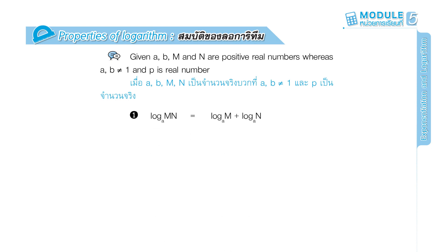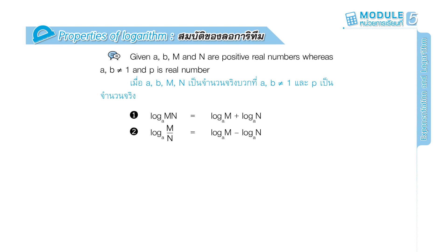Property 1: log(m·n) base a equals log m base a plus log n base a. Property 2: log(m/n) base a equals log m base a minus log n base a. Property 3: log(m^p) base a equals p times log m base a. Property 4: log a base a equals 1.